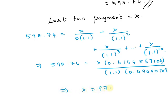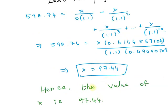Therefore, x equals 97.44. The value of the last 10 payments is 97.44. Thank you.